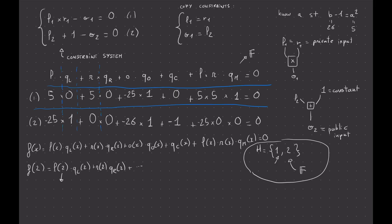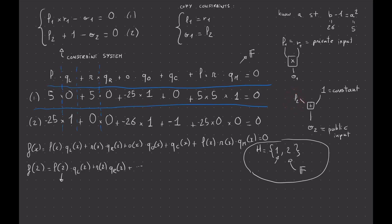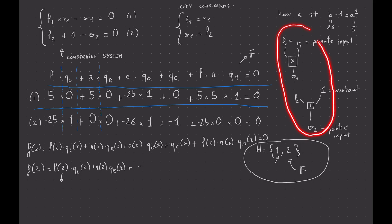If we evaluate f(2), we get L(2)·QL(2) + R(2)·QR(2) + etc. L(2) = −25, QL(2) = 1, R(2) = 0, QR(2) = 0, and so on. That −25 is the same −25 from our previous equation, representing a specific wire in the circuit. Everything is connected — we're still describing exactly the same circuit, even if we're missing the copy constraints that say this wire equals that wire.